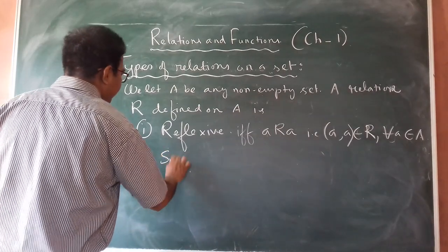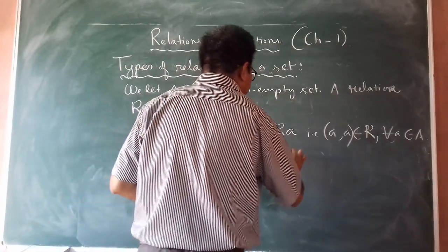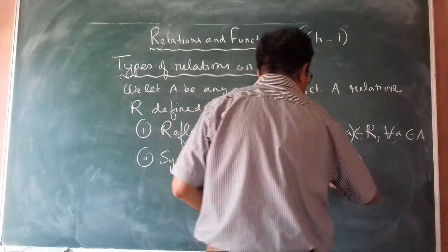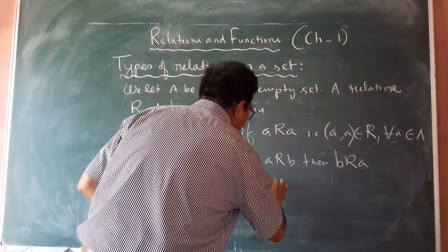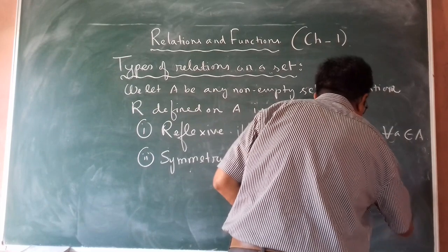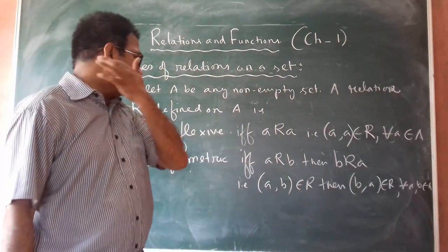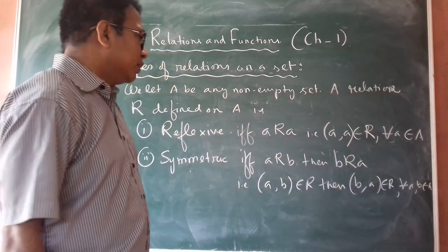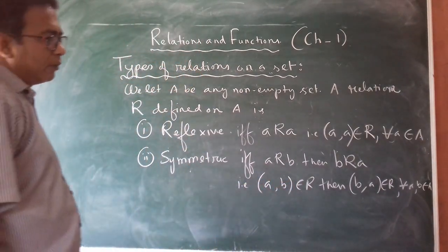Number 2 is symmetric relation. A relation R is symmetric if and only if whenever a is related to b, then we must have b related to a. That is, if (a, b) belongs to R, then we must have (b, a) belongs to R, for every a, b belonging to A.